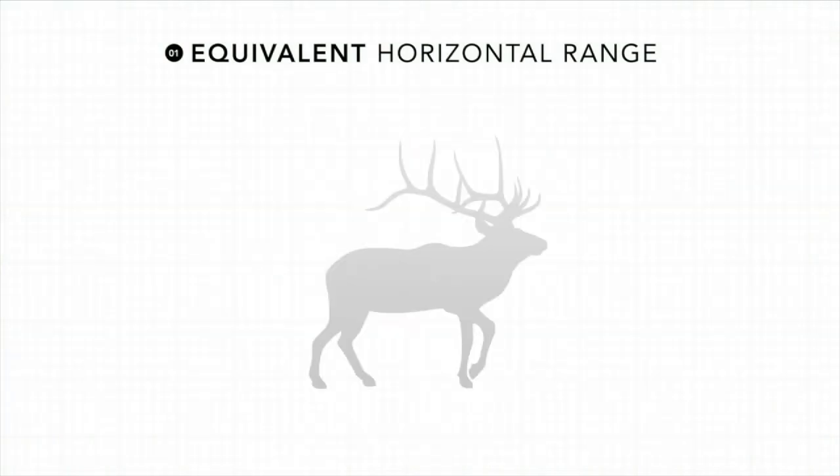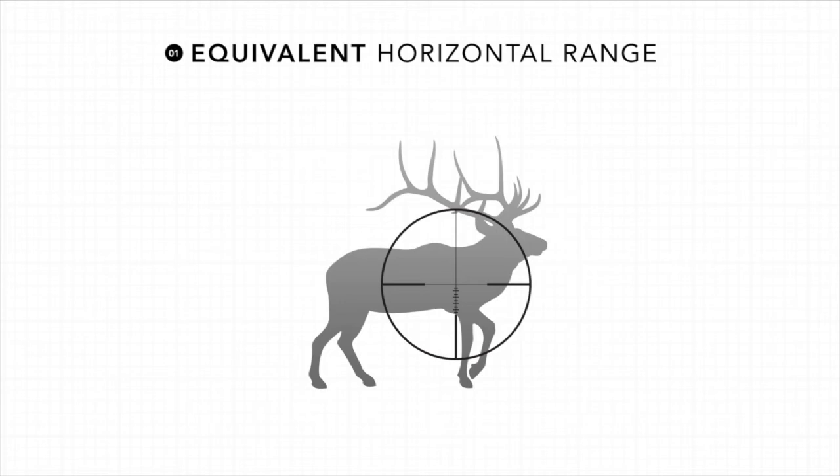The first option is equivalent horizontal range. This output first displays the line of sight distance and then the equivalent horizontal range. This reading is especially accurate if you have a scope with a ballistic drop compensation reticle.